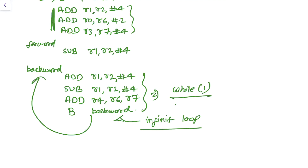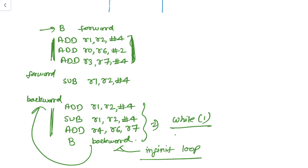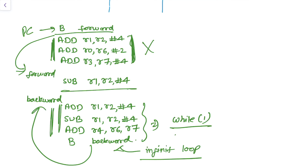It's an infinite loop since there is no condition to break it — the processor keeps looping. The instructions after the 'B forward' will never be executed, since once the PC executes 'B forward', it jumps back to the 'forward' label and keeps executing those instructions in a loop. As mentioned earlier, branch instructions are used to change the execution flow.